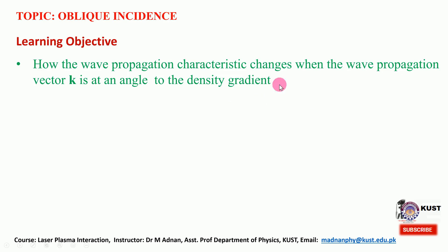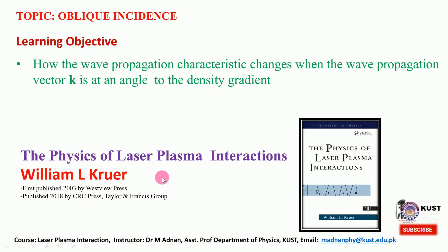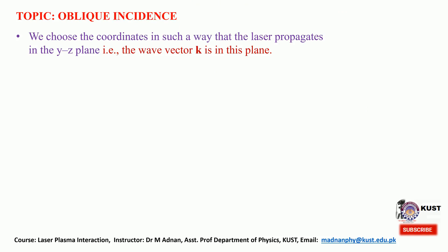We are considering inhomogeneous plasma, which is such that there lies a density gradient. The propagation vector k of the incoming electromagnetic wave or laser is at an angle to that direction along which the density gradient lies. In this course we are following the book 'Physics of Laser Plasma Interactions' by William L. Kruer, and some illustrations in this lecture are taken from that book.